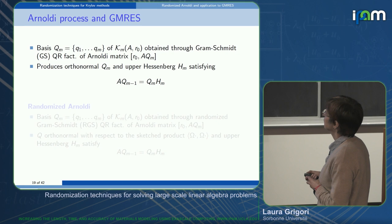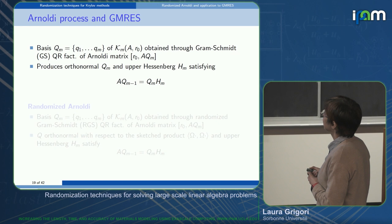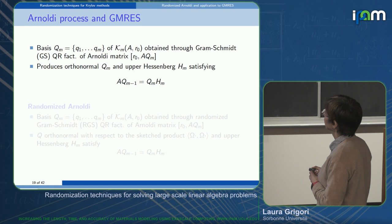The Arnoldi process generates an orthonormal basis Q_M for the Krylov subspace and produces an upper Hessenberg matrix H_M satisfying the Arnoldi relation: A·Q_{M-1} = Q_M · H_M. This is done via Gram-Schmidt factorization of the Arnoldi matrix.